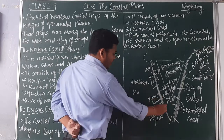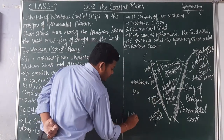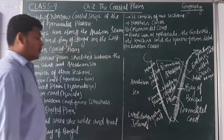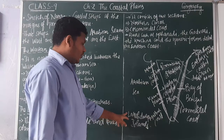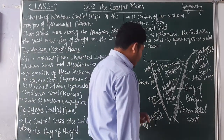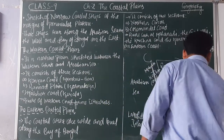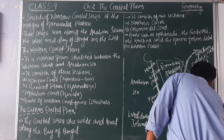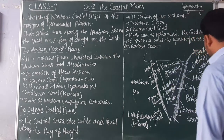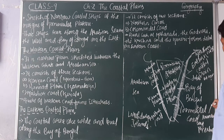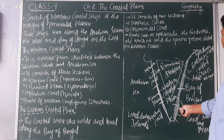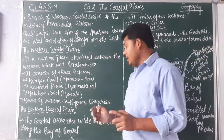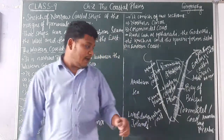In the Arabian Sea, opposite to the Malabar Coast, lie the Lakshadweep Islands. These islands come under the territory of India. In the Bay of Bengal, India has two groups of islands: the Andaman Islands in the east and the Nicobar Islands in the south, collectively called the Andaman and Nicobar Islands. They lie opposite to the Coromandel Coast in the Bay of Bengal.